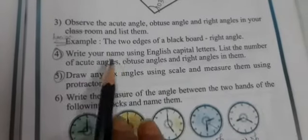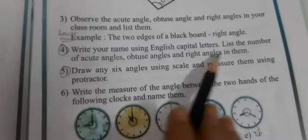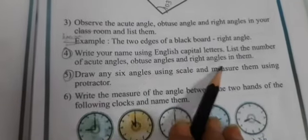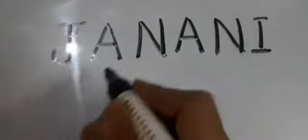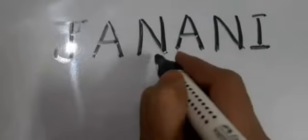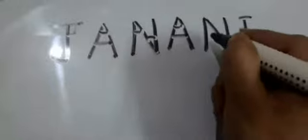Now let's move on to the fourth question: Write your name using English capital letters and list the number of acute angles, obtuse angles and right angles in them. I am going to write my name and show you how to observe the angles. See here — from here to here it is of a right angle. A is of acute angle. N is of acute angle. Here one angle forms, here one angle forms, here one angle forms — all these are right angles. So I and J are right angles, while A and N are acute angles.